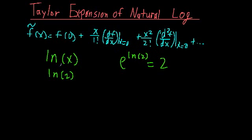We can't actually do a direct Maclaurin series expansion for the natural log. The reason is that with the Maclaurin series we expand about the point x is equal to zero, and for the natural log at x equals zero, this entire function is negative infinity — it's undefined.